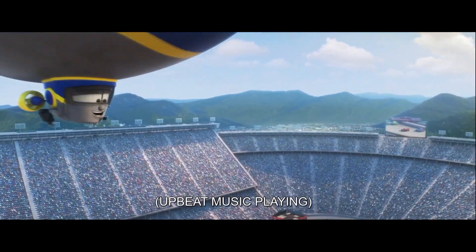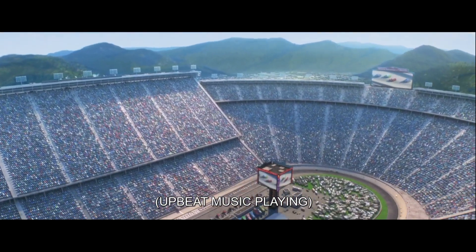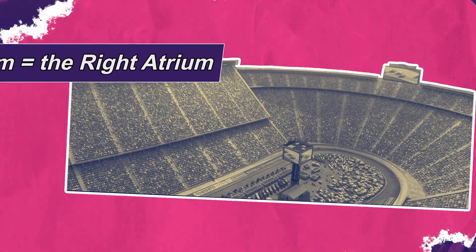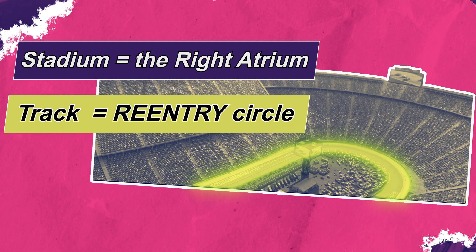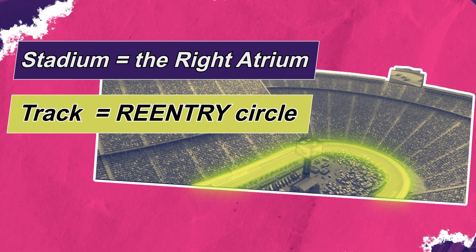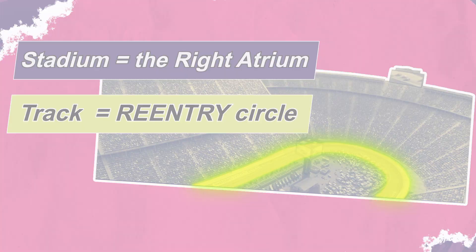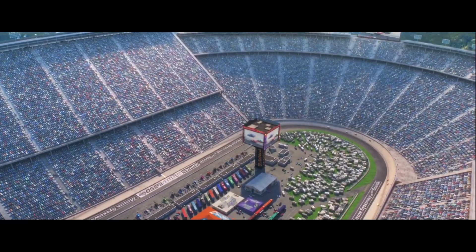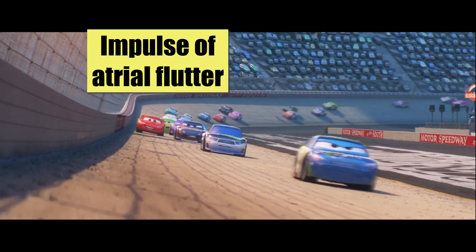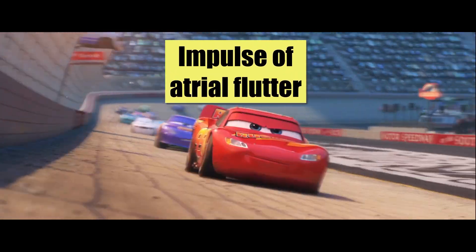To illustrate the concept: the stadium is the right atrium, the circular track inside the stadium is the reentry circle, and the car is the impulse of atrial flutter.